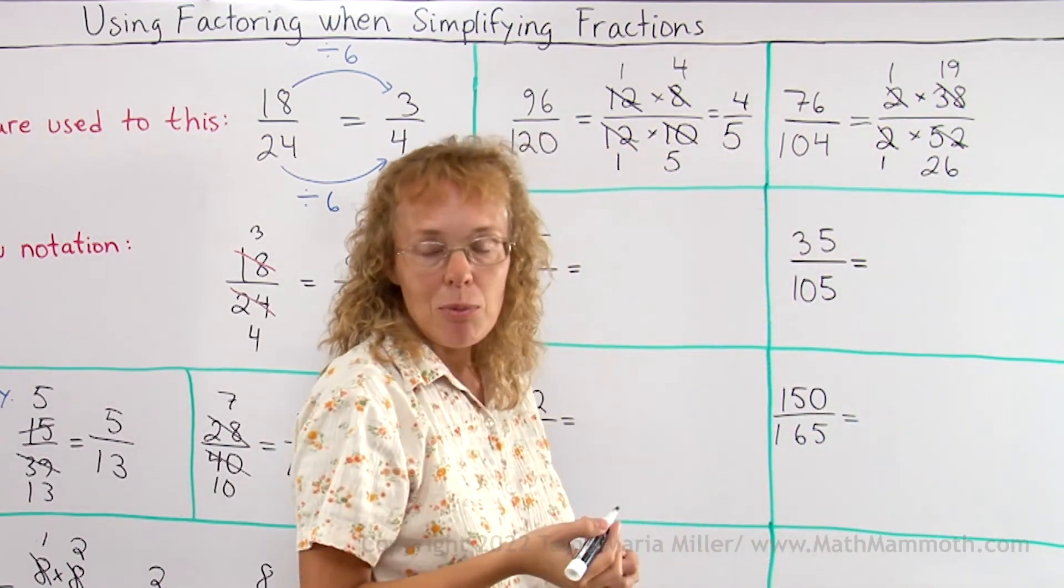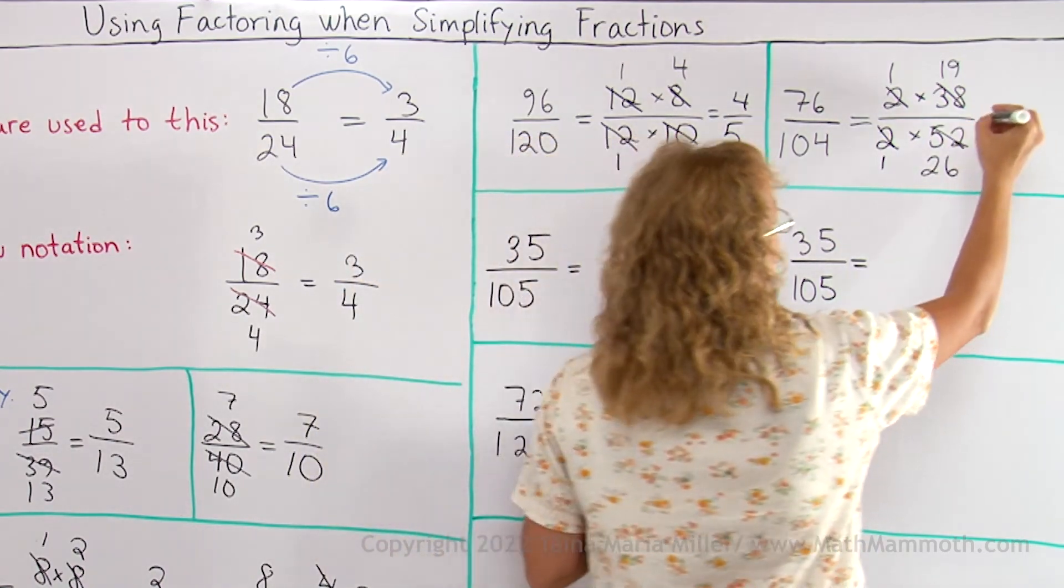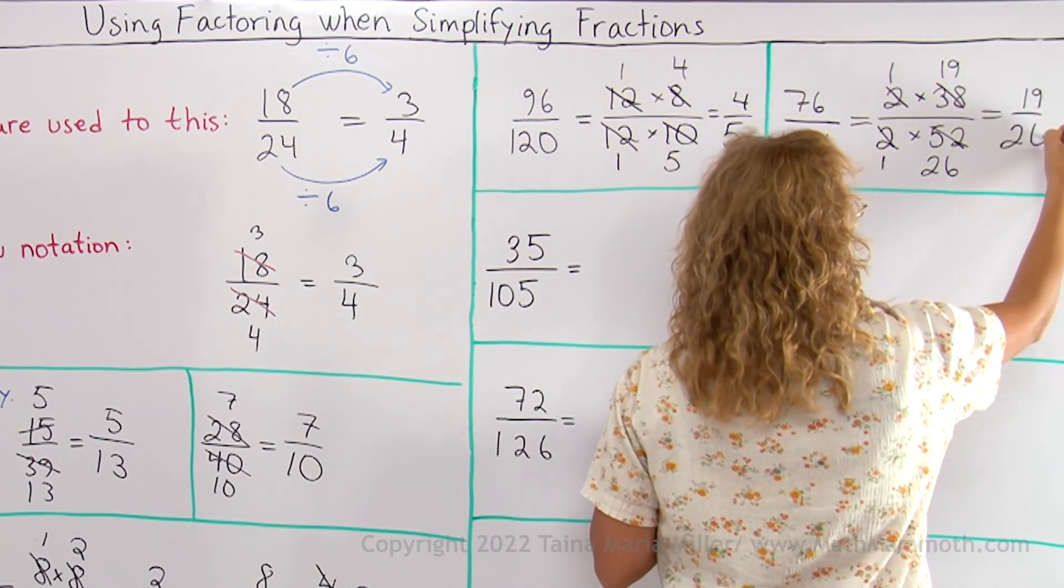Now I cannot simplify anymore because 19 is a prime. So there's 19 here and 26.